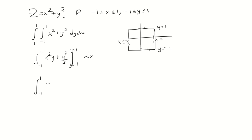So we'll plug in y equals 1. We have x squared plus 1 third, minus, now plug in negative 1, we have negative x squared minus 1 third.